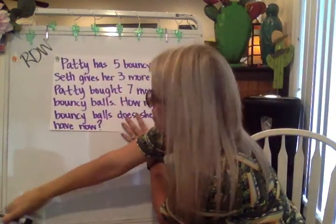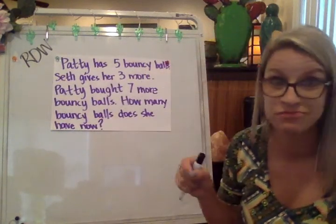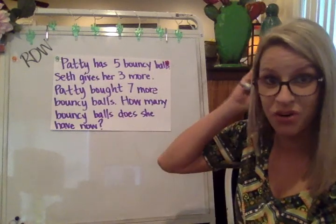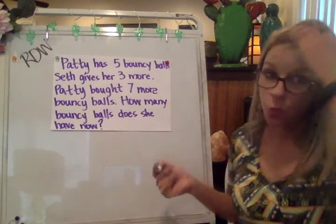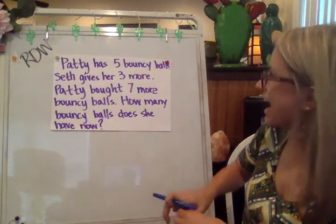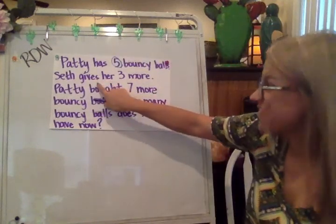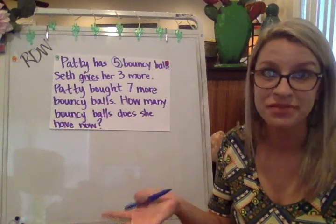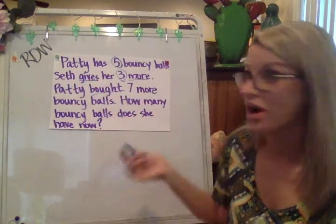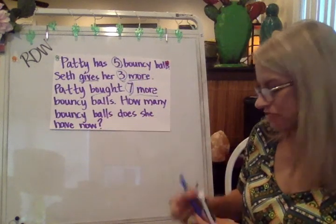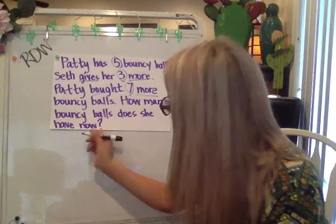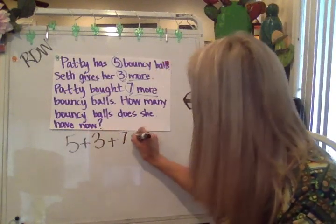This is a Patty and Seth equation. So Patty has five bouncy balls. Seth gives her three more, and then Patty bought seven more bouncy balls. How many bouncy balls does she have now? If Seth is giving her more, the value is going to get greater — she gets three more. If she buys some, she has more again — seven more. This is going to be an addition equation. All of these 'more, more, more' and buying and giving mean more. So we're going to write out five plus three plus seven equals something.